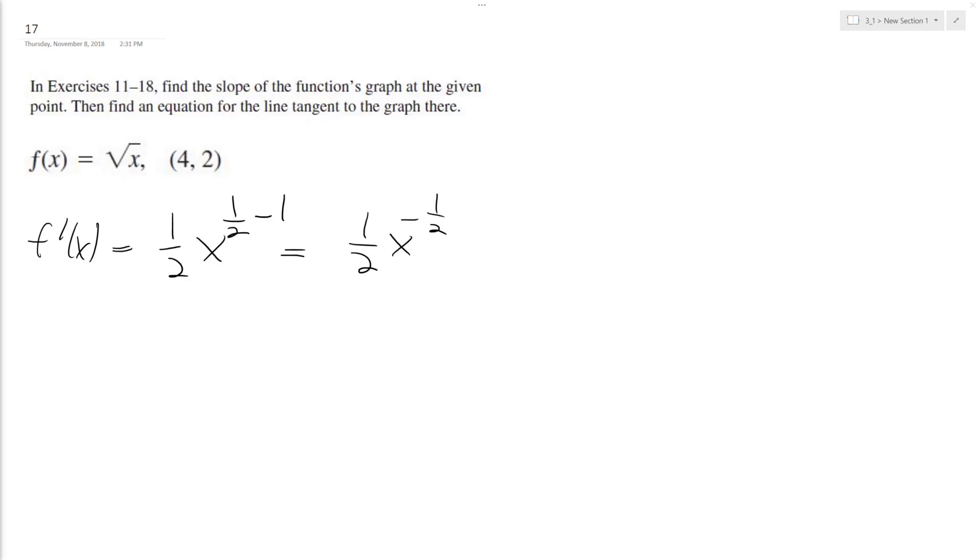All right, so I want to find the equation for the tangent line of square root of x at the point (4, 2). What I'm doing here first is finding the derivative.